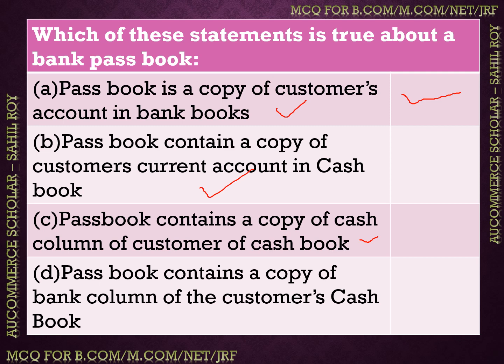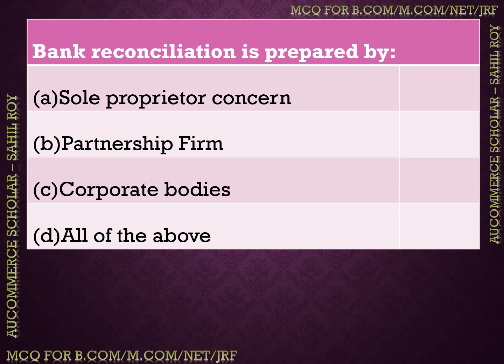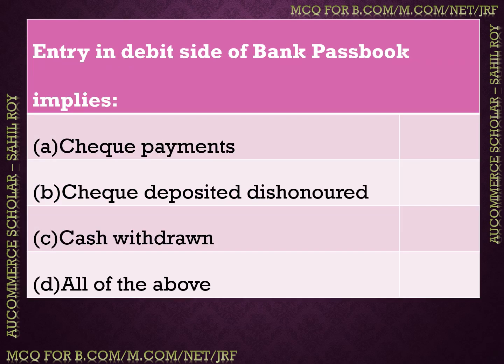Next question: bank reconciliation is prepared by — options: sole proprietor concern, partnership firm, corporate bodies, all of the above. The correct answer is all of the above — bank reconciliation is prepared by all types of entities. Also, entry in the debit side of bank passbook implies — check payments, check deposited dishonored, cash withdrawn, or all of the above. The correct answer is all of the above, option D.